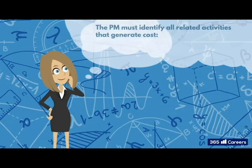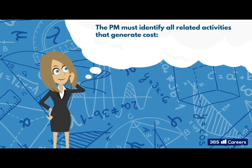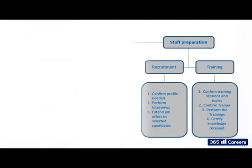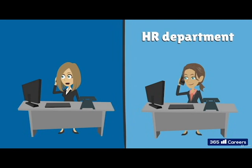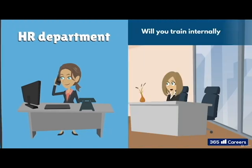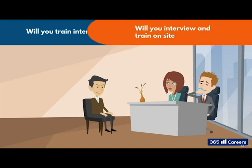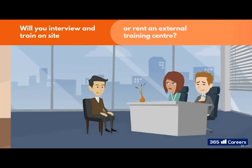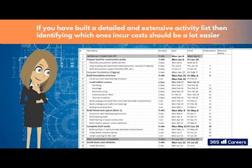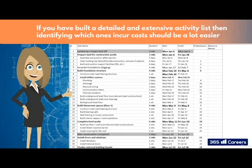You also have to identify all related activities that generate cost: delivery, car testing, insurance, things like that. On to staff preparation — working with the HR department is crucial here. You need to establish how many staff members are needed, what jobs they will have, and what costs will be incurred for recruitment. Will Lamberari use their own HR department, or will they pay for the services of an HR company? And then you need to consider training: will you train internally or hire a company? Will you interview and train on site, or rent an external training centre? There is plenty to think about here. But if you have built a detailed and extensive activity list, then identifying which ones incur costs should be a lot easier.